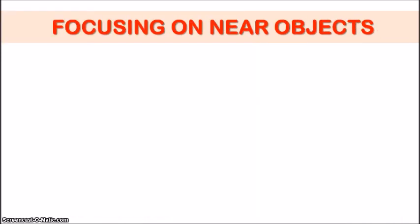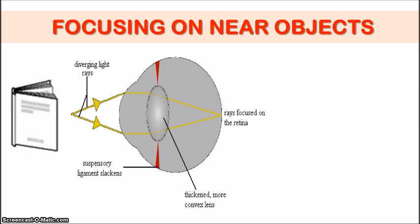Now let's look at this diagram here, focusing on near objects. We have a book here — that is the object which is close to our eye. And because the object is so close to our eye, the light rays are going to be coming at an angle. So the light rays are more diverging, more spreading out, as you can see in the diagram. Now in order for these light rays to enter the eye and be focused onto the retina at the back of the eye, it's going to require more bending.